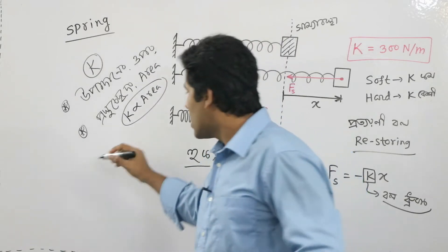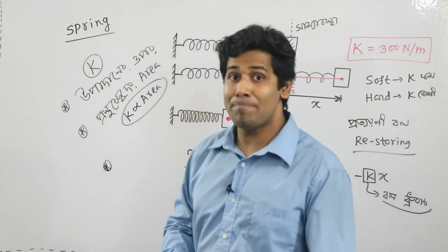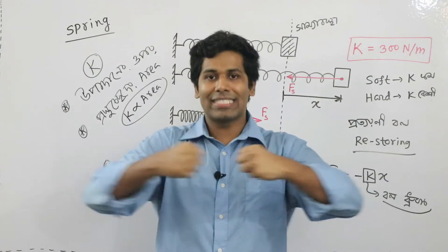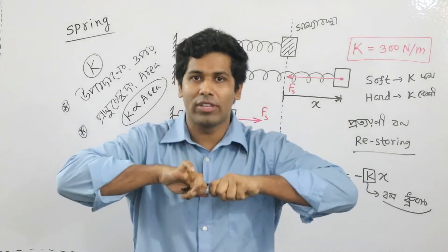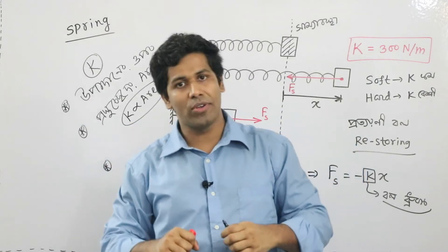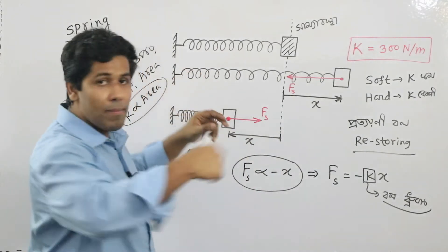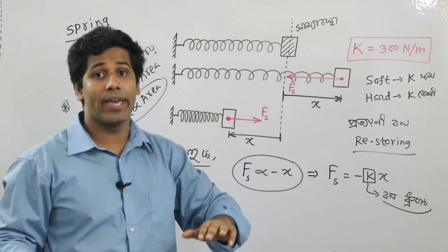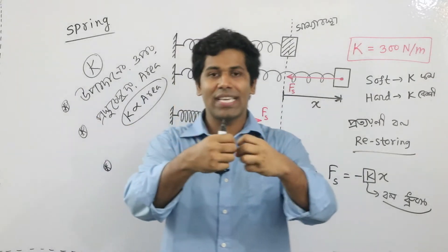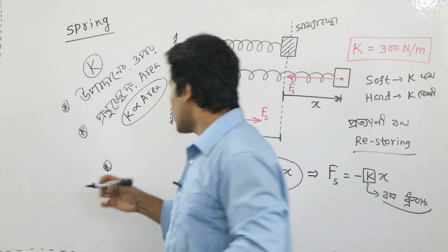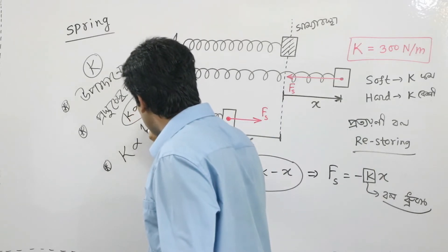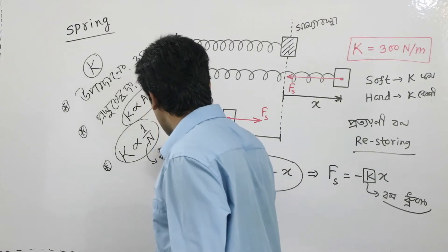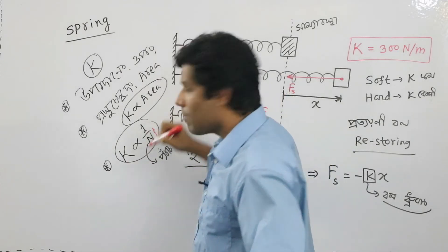The most important thing is the spring and its properties. Imagine a small tree versus a long tree — the number of turns matters. The spring with fewer turns is less flexible than one with more turns. The number of turns determines the path and stiffness of the spring.